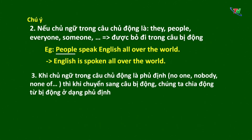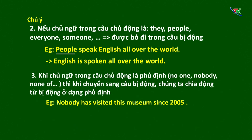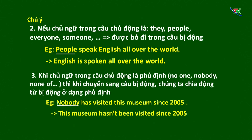Tiếp theo chúng ta có chú ý thứ 3: khi chủ ngữ trong câu chủ động là phủ định, ví dụ như là 'no one', 'nobody', 'none of', thì khi chuyển sang câu bị động chúng ta chia động từ ở dạng phủ định. Ví dụ: 'Nobody has visited this museum since 2005.' Chủ ngữ trong câu chủ động là 'nobody', bởi vậy khi chúng ta chuyển sang câu bị động, phải chuyển thành phủ định: 'This museum hasn't been visited since 2005.' Chúng ta thấy 'has' ở câu chủ động sẽ chuyển thành 'hasn't' trong câu bị động.